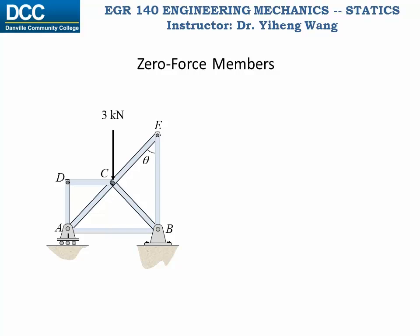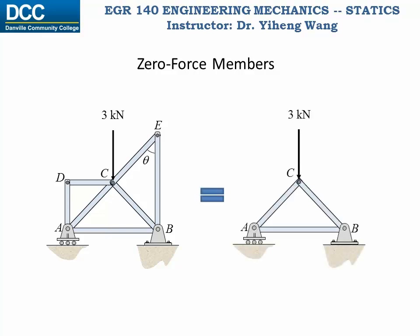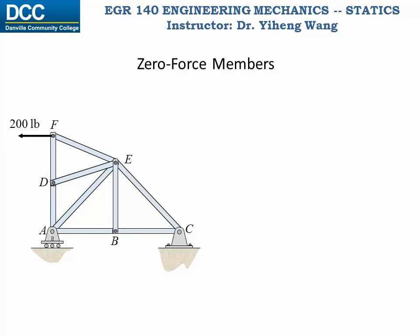You can simplify this truss structure by removing the zero force members. Note that you can no longer simplify this structure even though joints A, B, and C are each connected to only two truss members — these joints are also subjected to other external forces, and therefore they are not zero force members. Similarly, for another structure, if you set up the coordinate system at point B or point D, you can prove that members BE and DE are also zero force members. If a joint is connected to three truss members, is not subjected to any external force, and two of the three members are collinear, then the third member must be a zero force member and can be removed from the structure in your analysis.